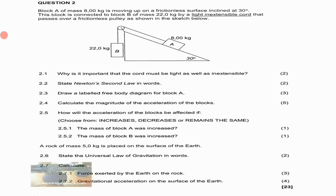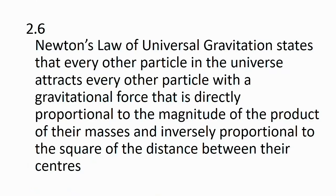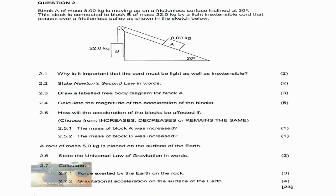A rock of mass 5 kg is placed on the surface of the earth. Question 2.6 asks us to state Newton's Law of Universal Gravitation: every particle in the universe attracts every other particle with a gravitational force that is directly proportional to the product of their masses and inversely proportional to the square of the distance between their centres.